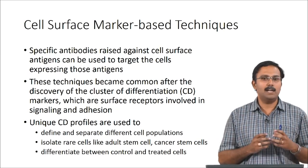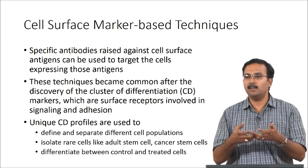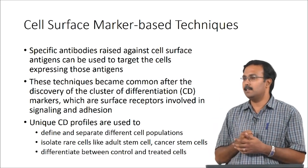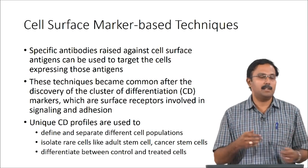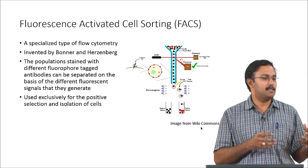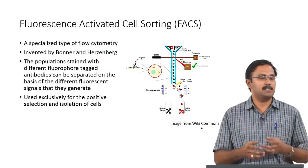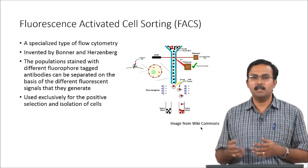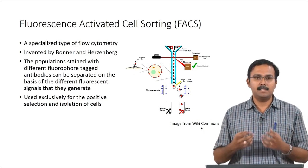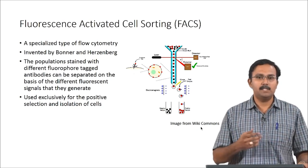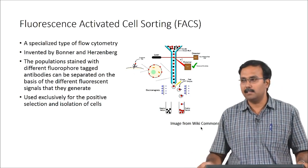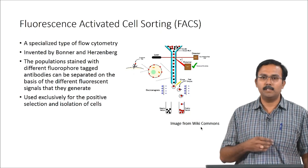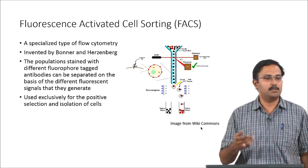CD markers can be used to isolate rare cells because a particular cell type may have a combination of CD markers enabling specific targeting and isolation. They can also differentiate between control and treated cells. One process using surface markers for separation is fluorescence-activated cell sorting, or FACS, which is a specialized type of flow cytometry invented by Bonner and Herzenberg. Populations are stained with fluorophore-tagged antibodies and separated on the basis of fluorescent signals. FACS is used exclusively for positive selection and isolation of cells.